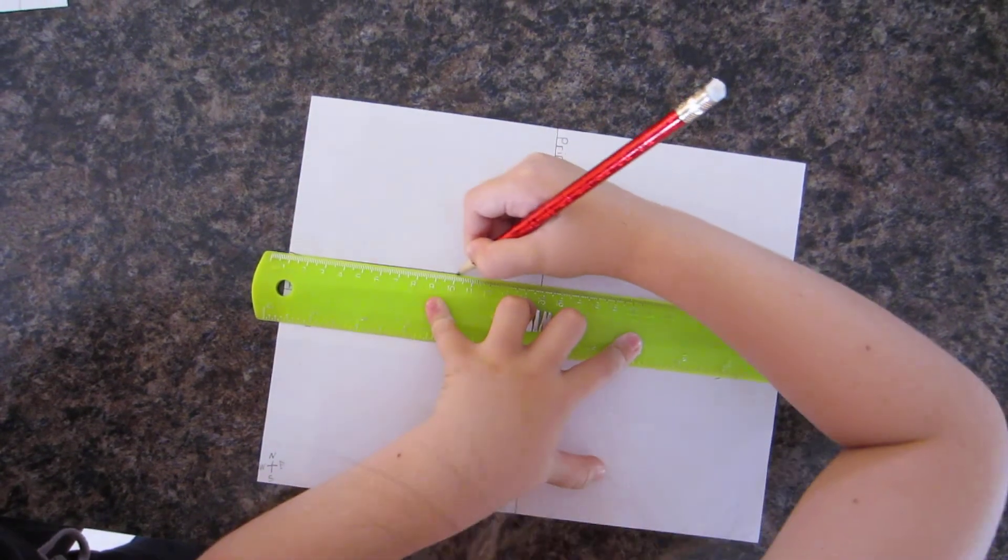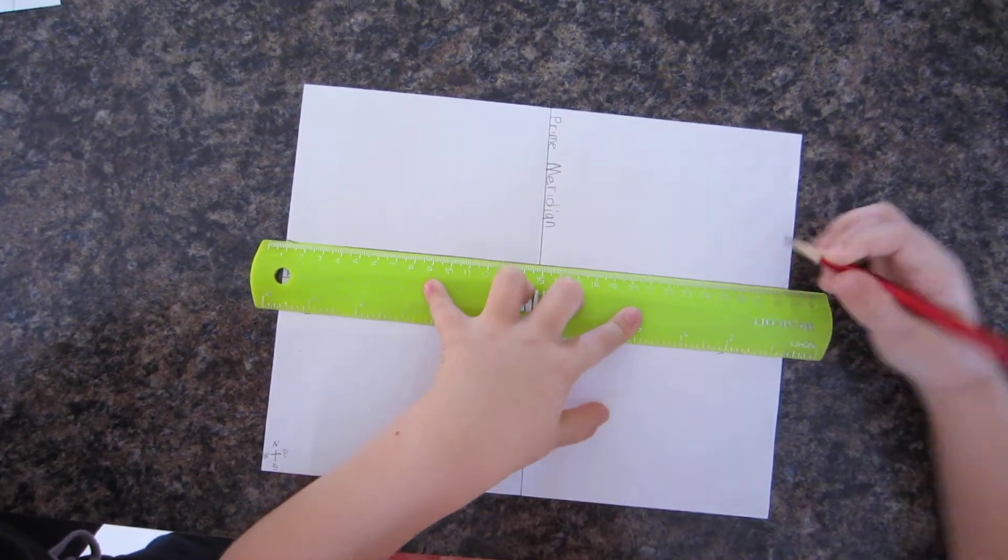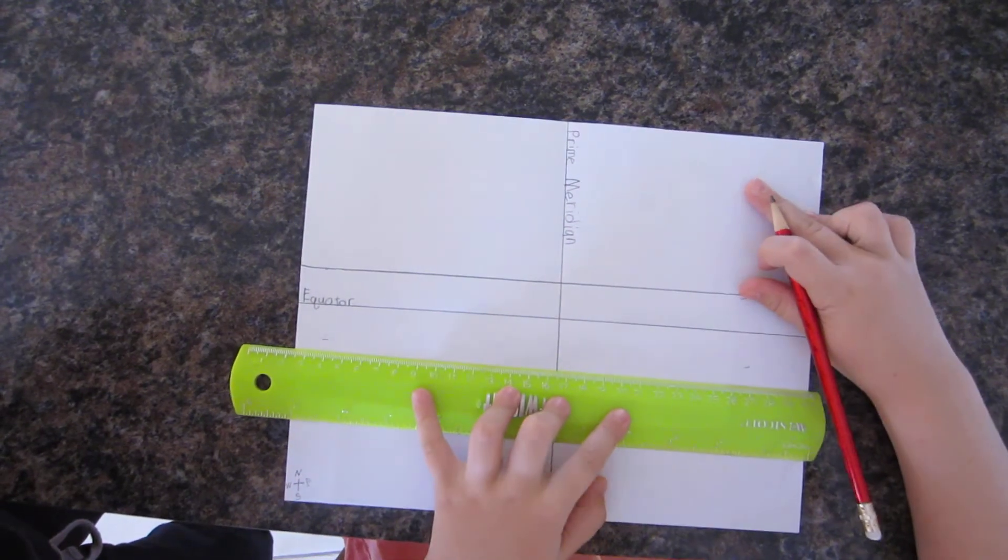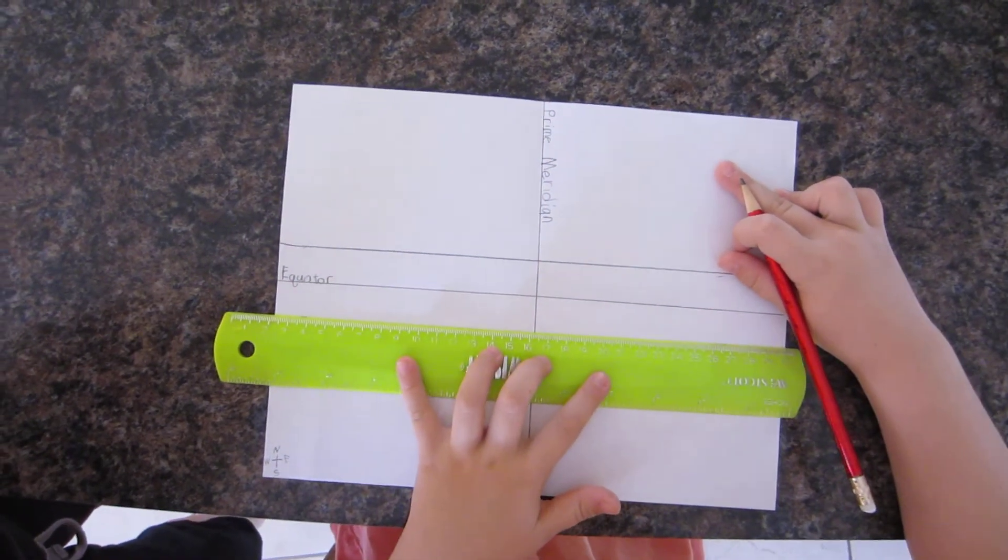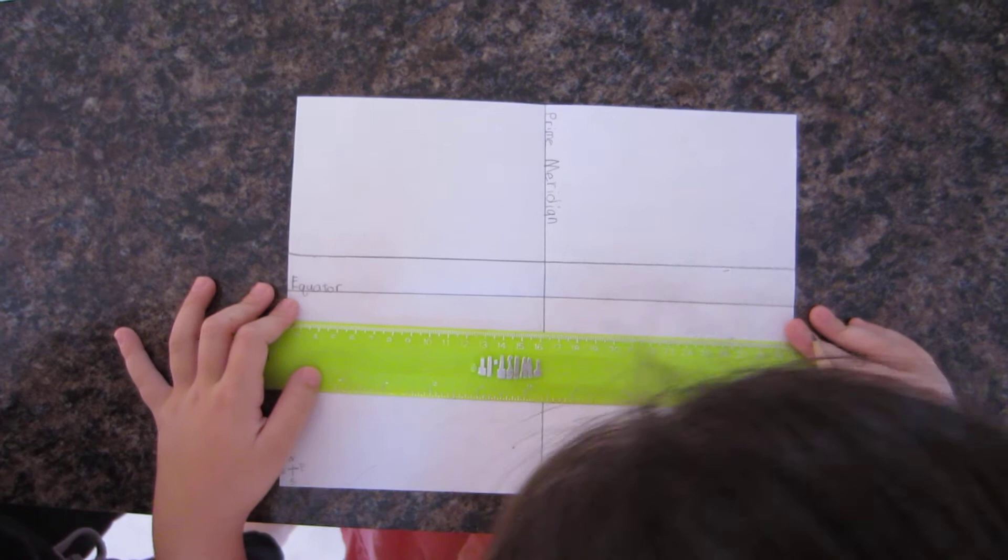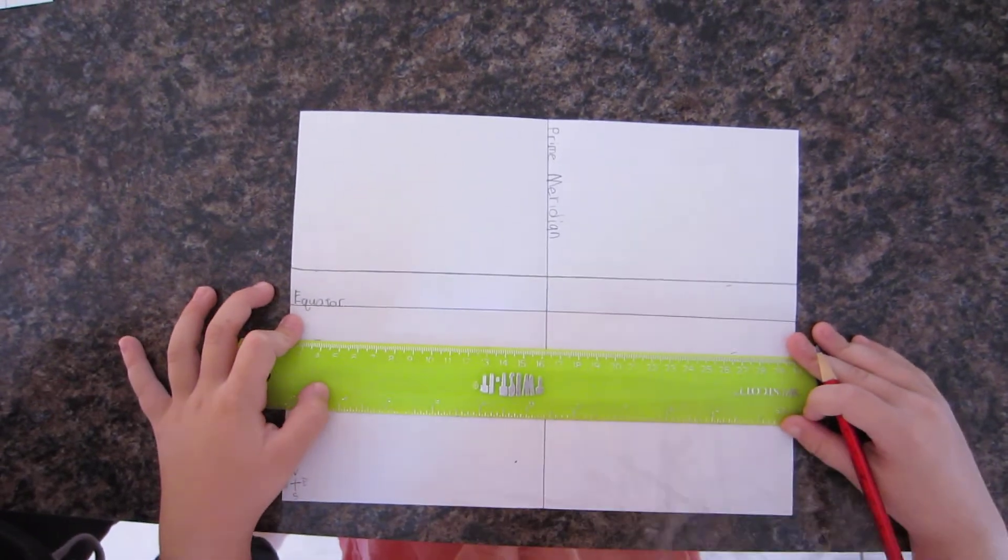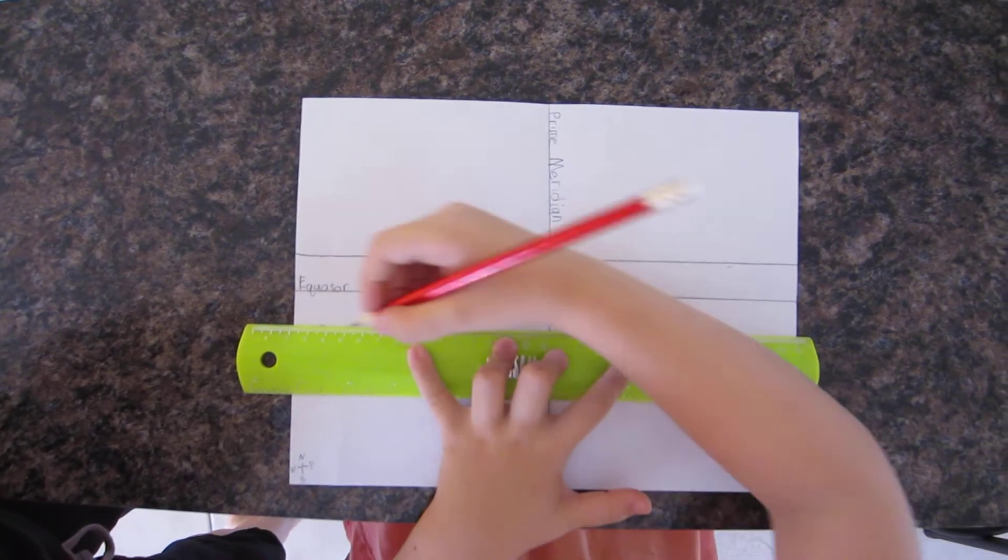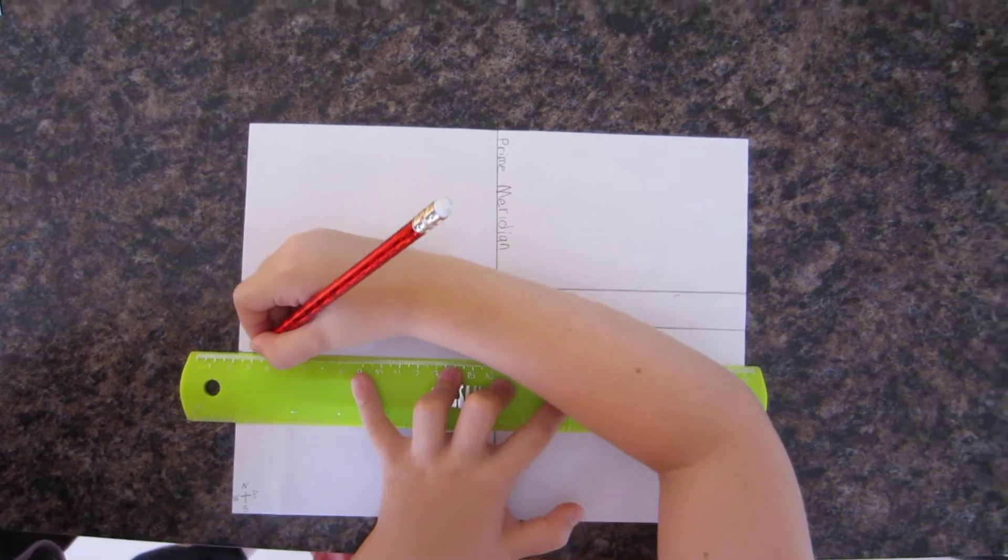And which line is north of the equator? The Tropic of Cancer. And which line is south of the equator? The Tropic of Capricorn. Okay, so let's trace that line and then I'll have you label those and then we'll come back for our next step.